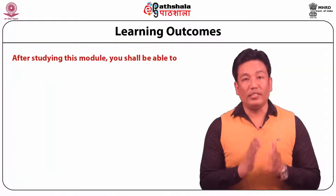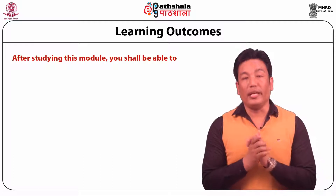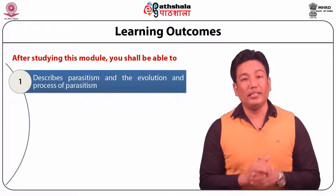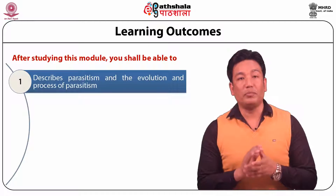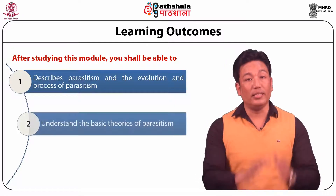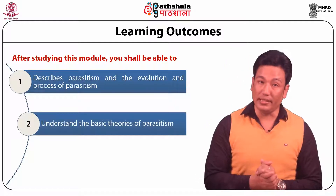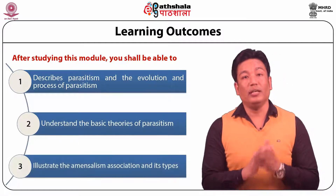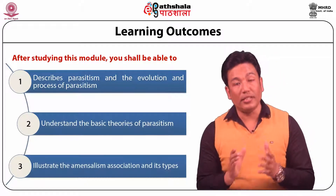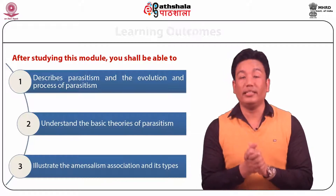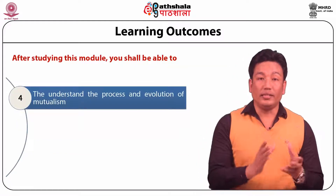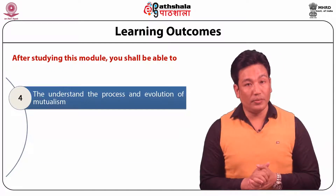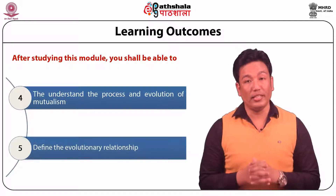Learning Outcomes. After studying this module, you shall be able to describe parasitism and evolution and the process of parasitism, understand the basic theory of parasitism, illustrate the amensalism association and its types, understand the process and evolution of mutualism, and define the evolutionary relationship.